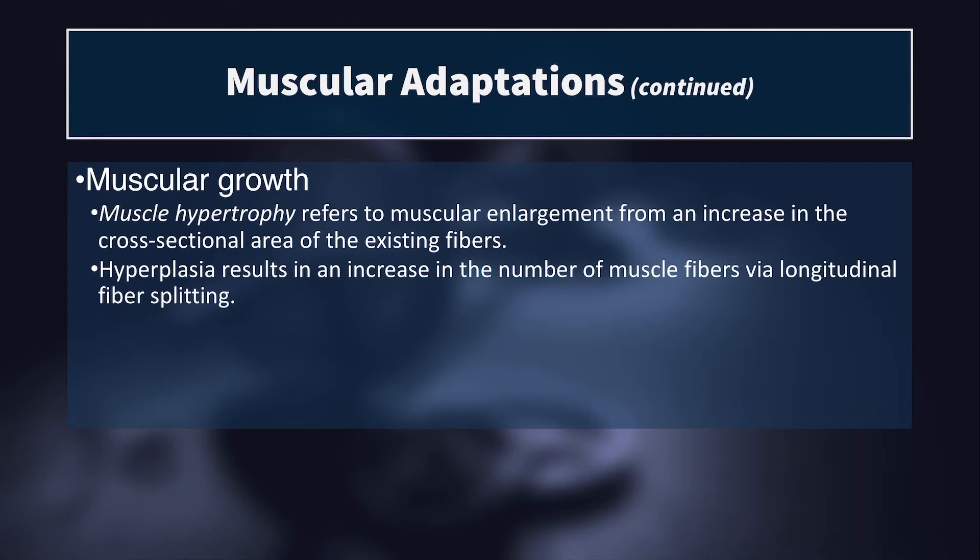There are two ways that a muscle can grow: via hypertrophy or by hyperplasia. Hypertrophy refers to muscular enlargement from an increase in the cross-sectional area of existing muscle fibers. You take a muscle fiber and subject it to mechanical tension and to metabolic byproducts of muscular contraction, and it will adapt by creating more myofibrils inside of that muscle fiber. It will pack more actin and myosin proteins into that muscle cell, so now there are more contractile elements and it gets larger.